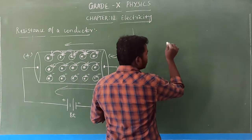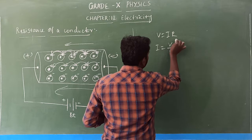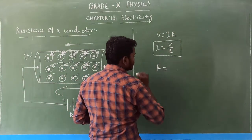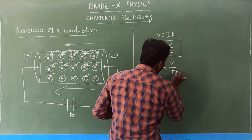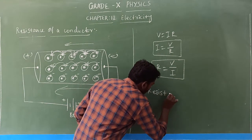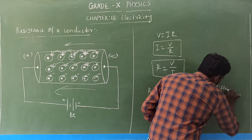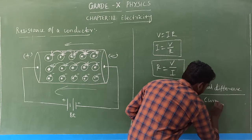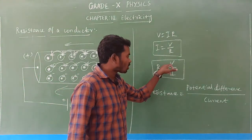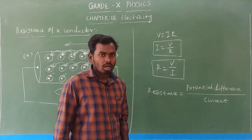According to Ohm's Law, V equal to IR. So I which is equal to V by R, and R which is equal to V by I. Resistance equals potential difference divided by current. The ratio of potential difference and current equals resistance.